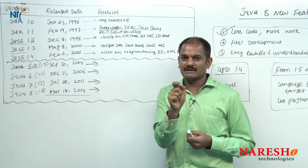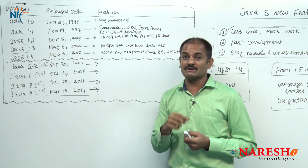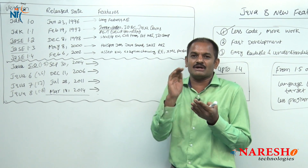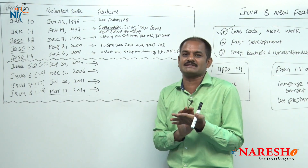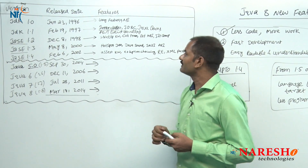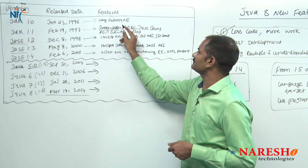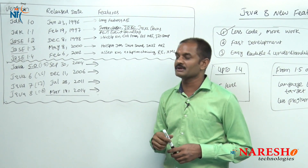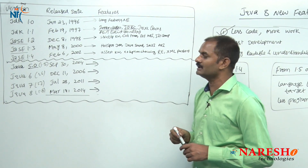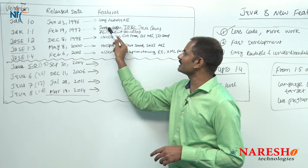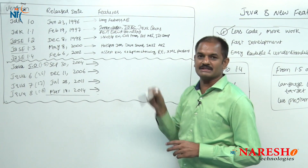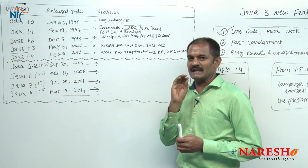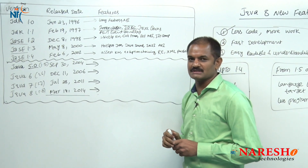Previously in JDK 1.0, if you wanted to click on a button and have some logic execute in the background, you had to write that logic in a separate class. With the inner classes concept, you can write that class and logic inside the current frame class itself — that is called retooling. JDBC is one of the very important topics of the entire Java language — interacting with the database — and that support is given from JDK 1.1 onwards.